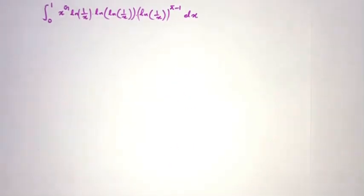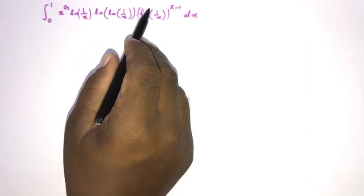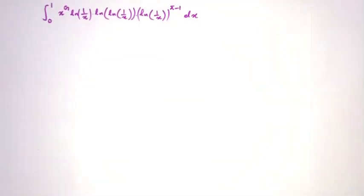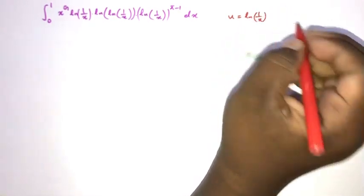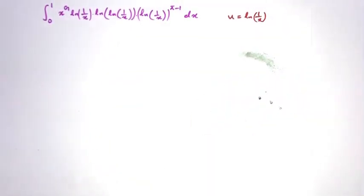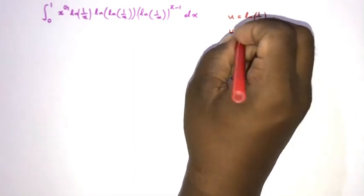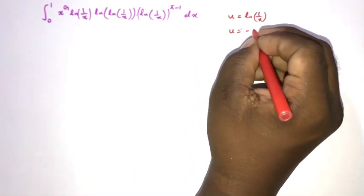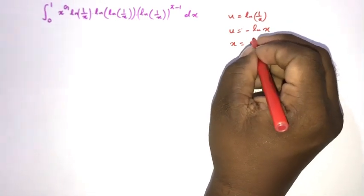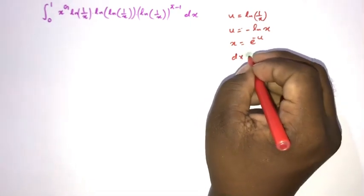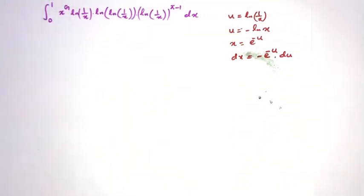How to begin? Well, here we have natural log of 1 over x appearing three times, so I am going to take a substitution: u equals natural log of 1 over x. If we rearrange, u equals minus natural log of x, so x equals e to the minus u. Differentiating, dx equals minus e to the minus u du.